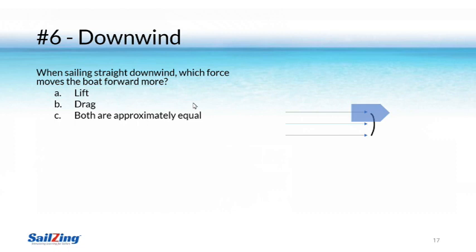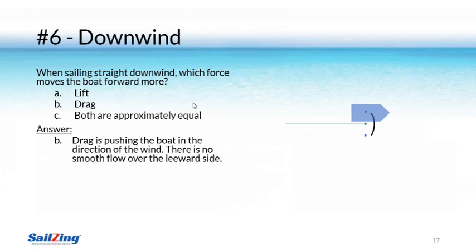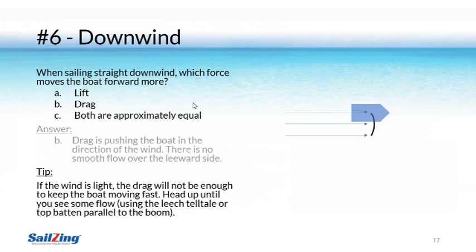Let's end with a question about downwind sailing to see how well you understand lift and drag. The answer is that drag is really pushing the boat forward in the direction of the wind. There is no smooth flow over the leeward side, so there's no appreciable lift due to faster moving air on that side. But if the wind is light, the drag will not be enough to keep the boat moving fast — to go faster you have to create more lift. You can use the upper leech to decide how far to head up, until you see some flow using the leech telltales, or at least that the top batten is parallel to the boom and not hooked in.